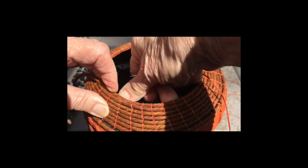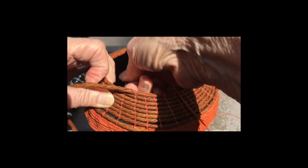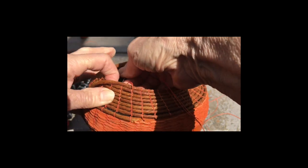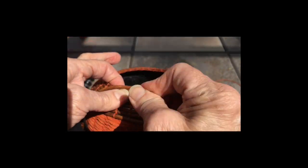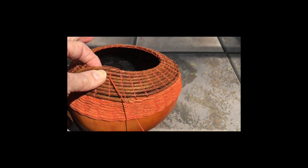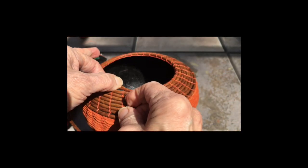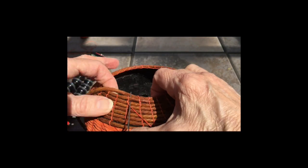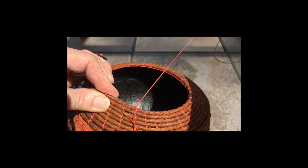So there's my first stitch and I'm pulling it over. And again I'm coming in under that first row to the left of that stitch, pulling my thread out, going into the right of the stitch, and then using my needle to push that new row down a little bit.